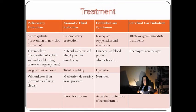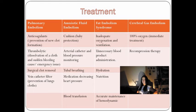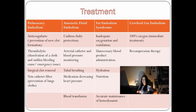Treatment of pulmonary embolism includes thrombolytic therapy, surgical clot removal, and vein catheter filter. Treatment of amniotic fluid embolism involves cushion support, arterial catheter and blood pressure monitoring, and intubated breathing. Treatment of fat embolism syndrome includes blood product administration, hydration, and nutrition.